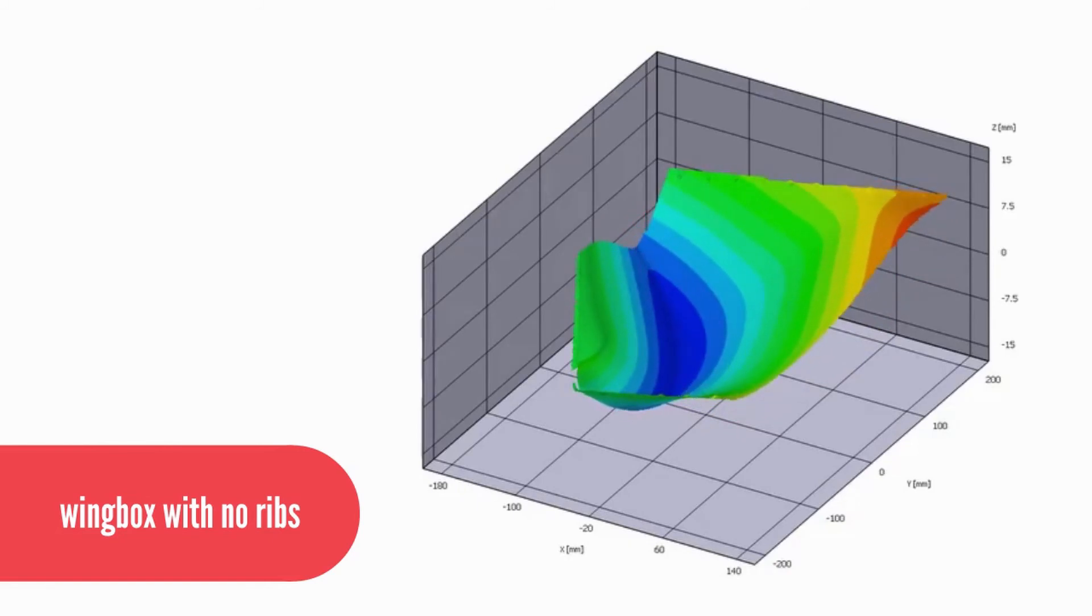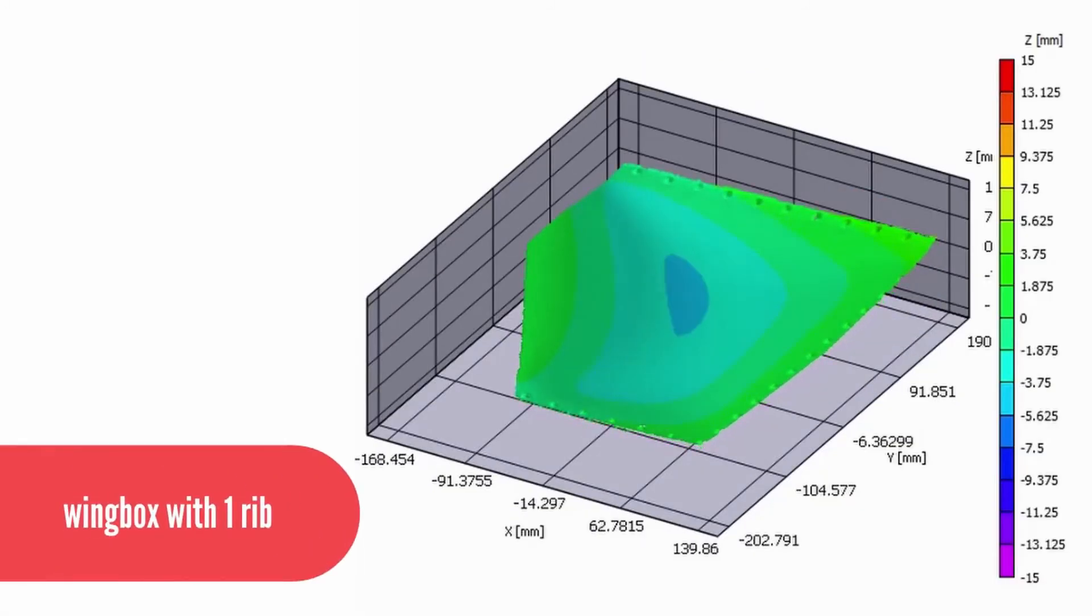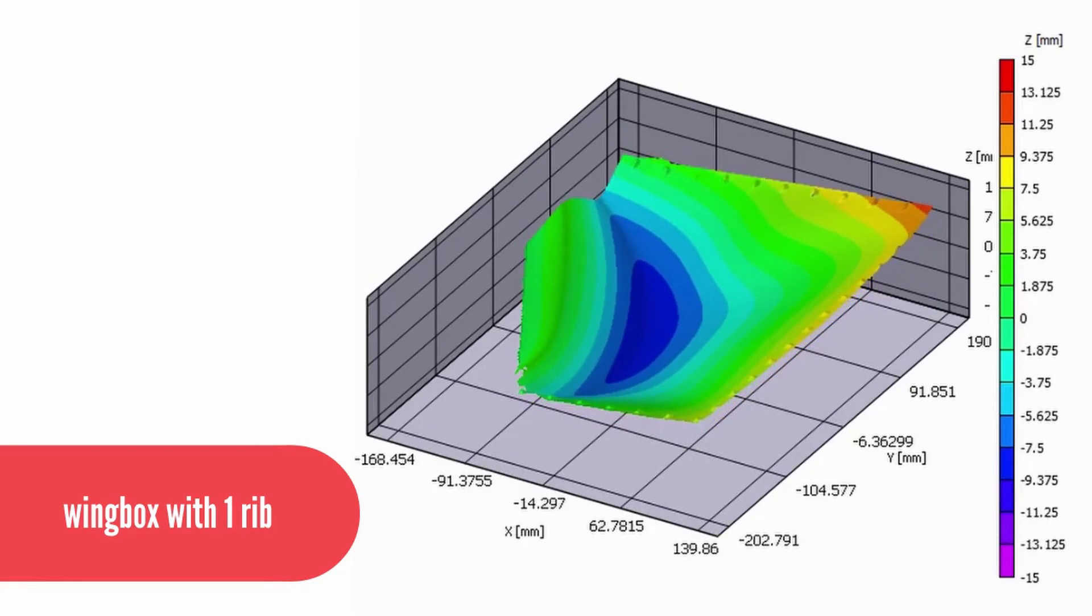In the wing box with one rib, there's a similar dent, but there's also one that pops up outwards nearby. However, the magnitude of the deformation is lower than the wing box with no ribs. We seem to be getting somewhere.